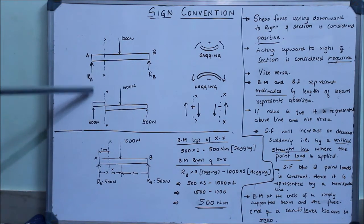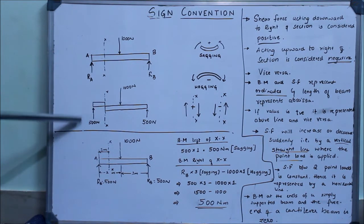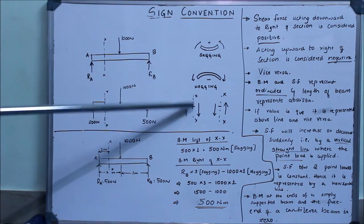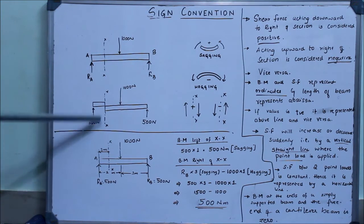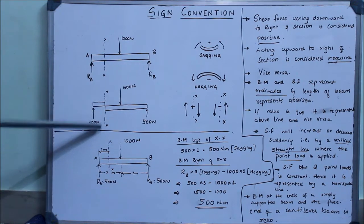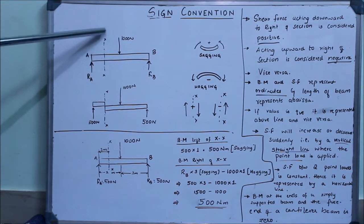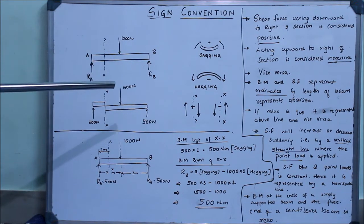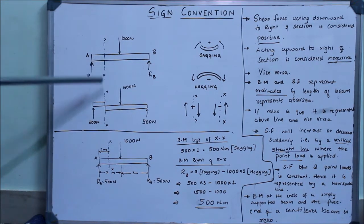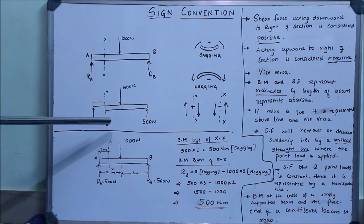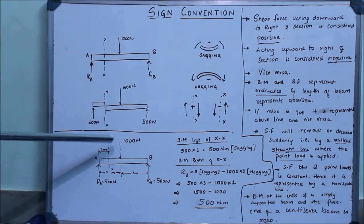Now let me say I take it to the left of the section. You can see that there is no load acting here, there is only a reaction load. But if you are taking to the left of the section and the load is acting upward, you take it as positive. So you get it again as 500 newtons. What we see from here is that no matter which side of the section you take, the shear force at that point is going to be the same. For calculation purposes, you take the side where the number of forces acting are fewer, so that the calculations become easier.